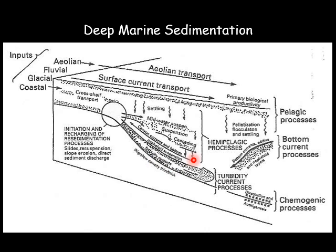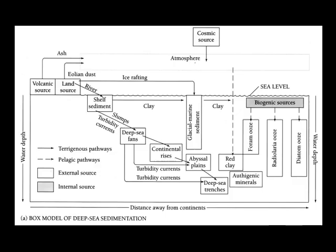Beyond the hemipelagic area, three processes are predominant. This is the area where you have pelagic sedimentation. Bottom current and chemogenic deposition prevails.